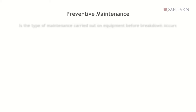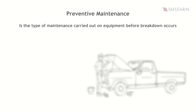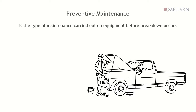Preventive maintenance is the type of maintenance carried out on equipment before breakdown occurs. It involves performing regular routine checks on equipment to prevent breakdowns from occurring in the future. Typical examples include regular servicing of cars,